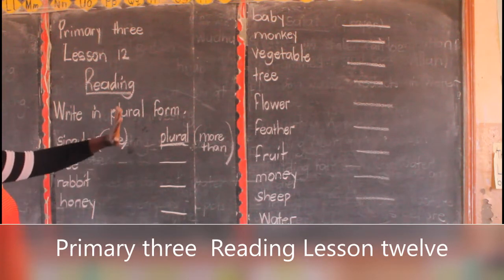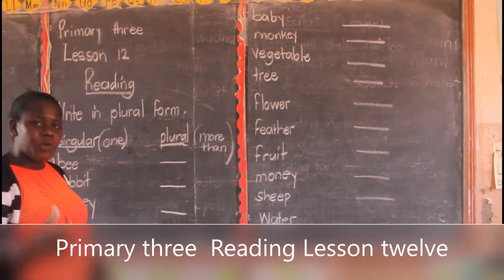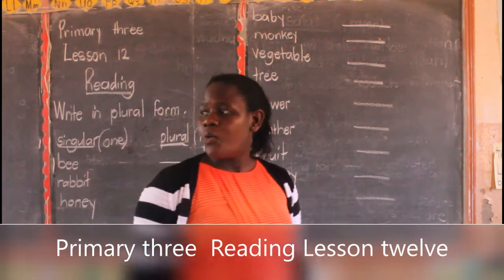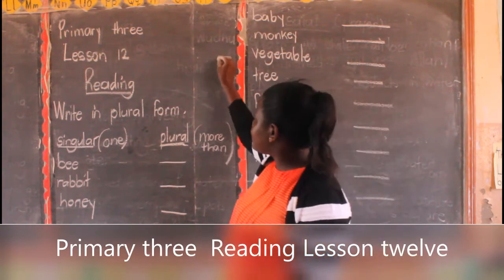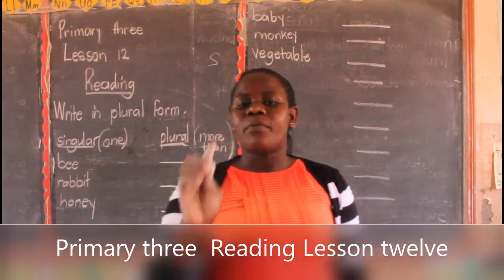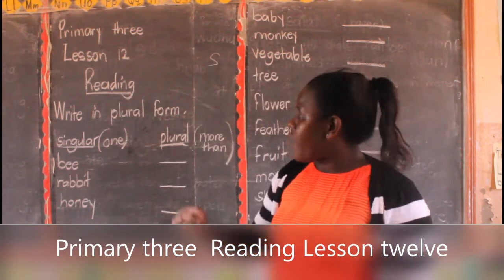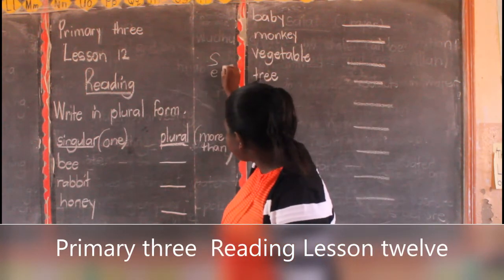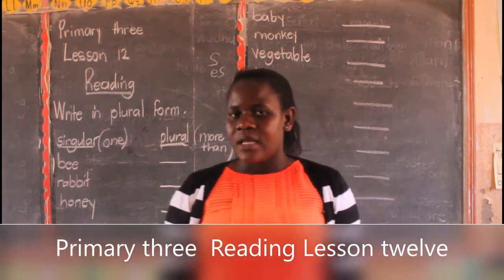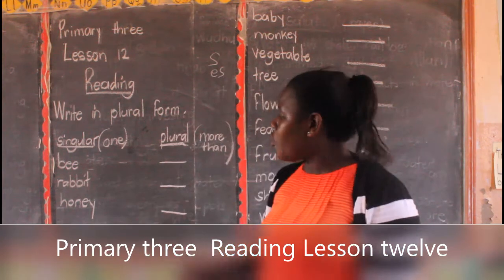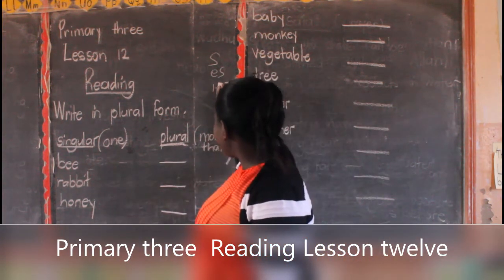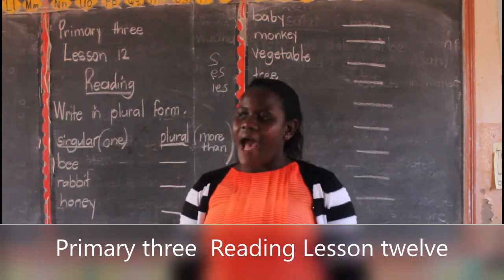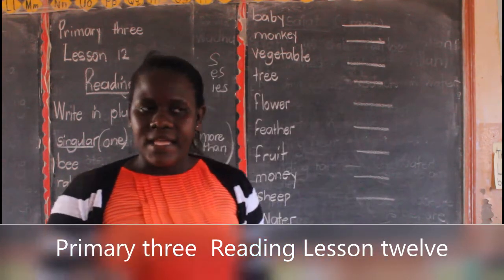Before we handle all of these nouns on the chalkboard, remember when we are forming plural forms, we have those plural forms whereby we add S. We also have those nouns whereby you remove Y and add IES. You omit Y, put I, then add ES.